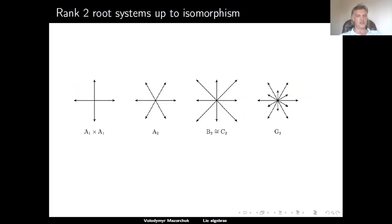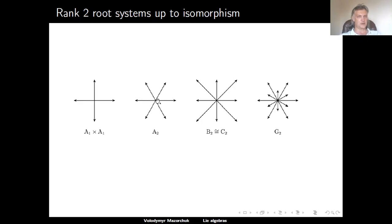Here is a picture giving the answer for root systems of rank 2; the proof is postponed to the next lecture. In rank 2 we have four different root systems depicted geometrically inside the Euclidean plane: one consisting of four vectors, one of six vectors, one of eight vectors, and one of twelve vectors. It is easy to see from these pictures that they are root systems — they are finite, don't contain zero, span the vector space, and are stable under reflections. For example, taking any vector in the system, the reflection of the entire picture with respect to the orthogonal line gives the picture back.